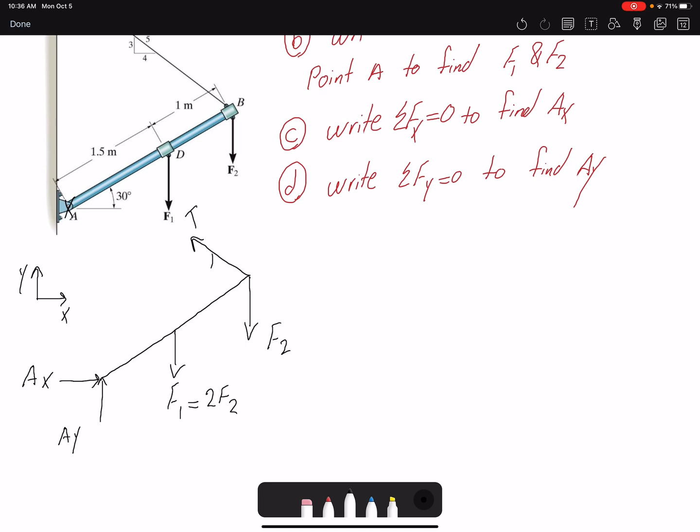We have the dimensions or the directions in terms of the dimension of the triangle: three, four, five. That means that it's going to have a horizontal component and a vertical component, and both components are going to create a moment about point A.